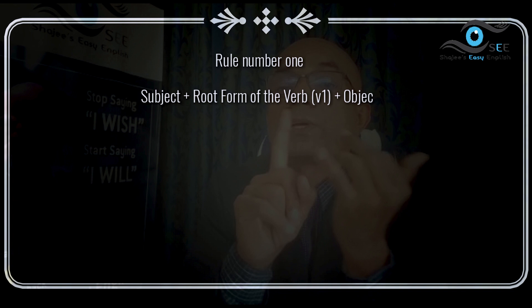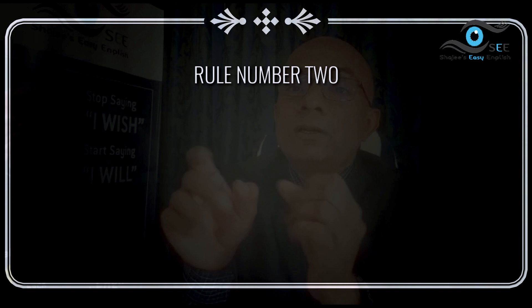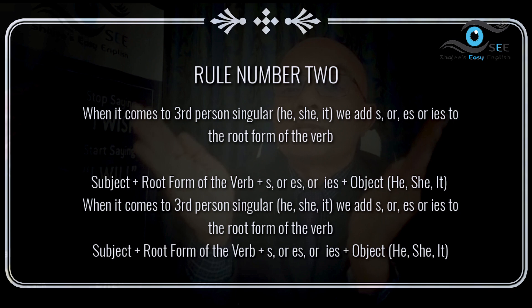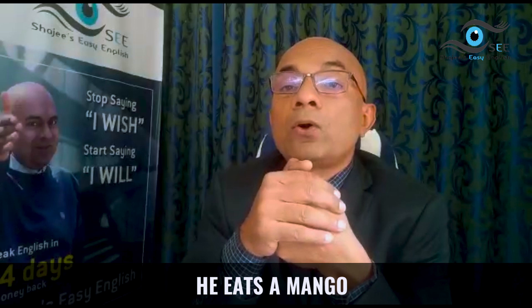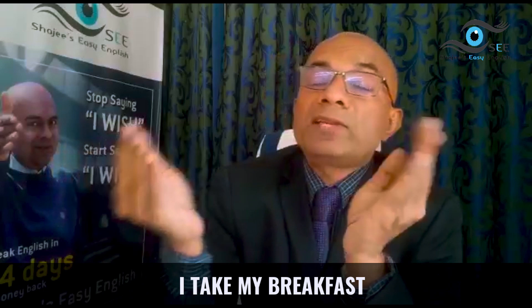Remember always — there are two rules. First rule: simple present tense, subject plus root form of the verb plus object. That we use for first person singular I, plural we, second person singular and plural you, and third person plural. And the second rule: when it comes third person singular in simple present tense, we add -s or -es to the root form of the verb. I eat a mango. We eat a mango. You eat a mango. He eats a mango. She eats a mango. And it eats a mango. And they eat a mango. I get up in the morning. He gets up in the morning.